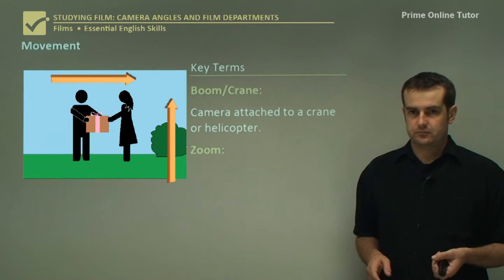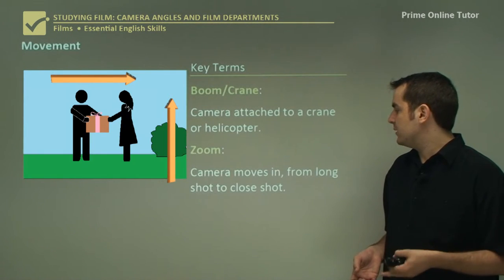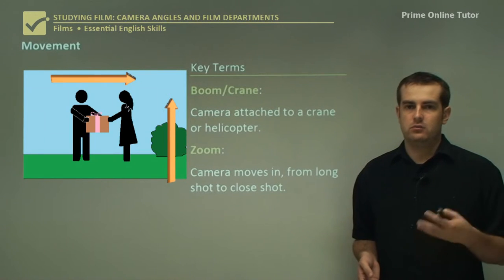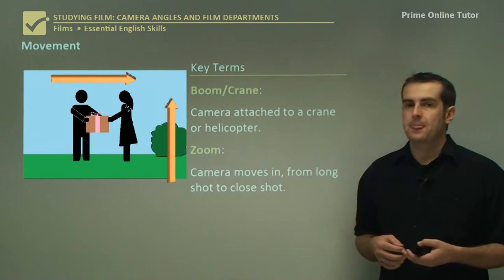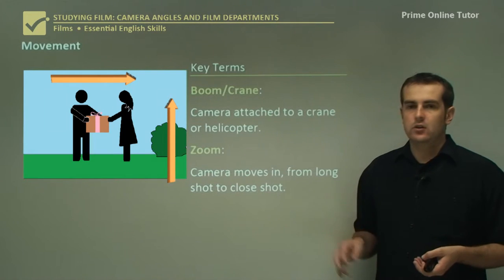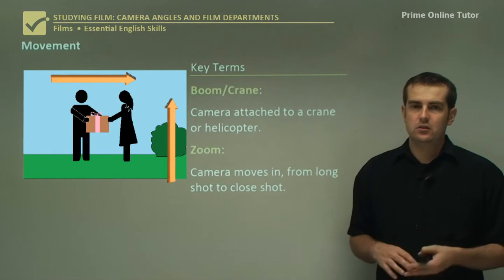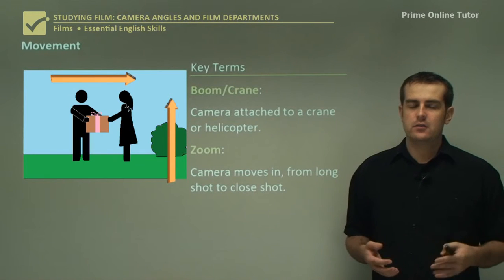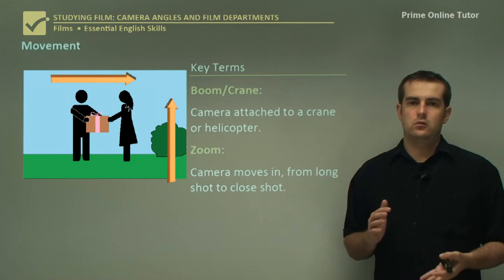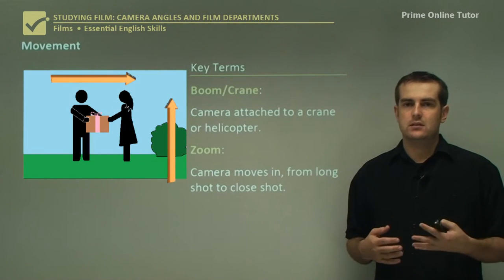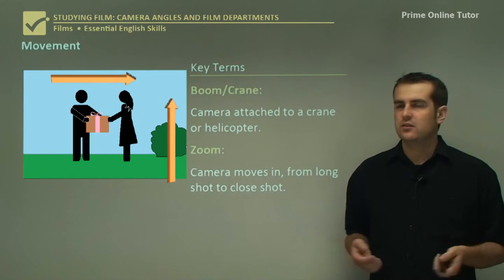Zooming in — you'll be familiar with this on your own camera. The camera zooms in from a long shot to a close shot, or in reverse. So you're looking at movement, angle, or distance as the three main categories of camera technique.